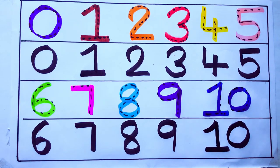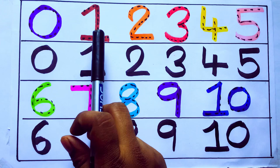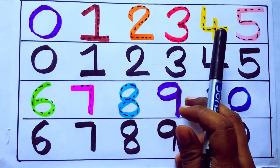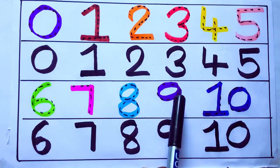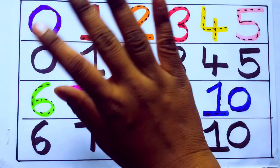One second learning numbers: 0, 1, 2, 3, 4, 5, 6, 7, 8, 9, 10. Okay, bye kids.